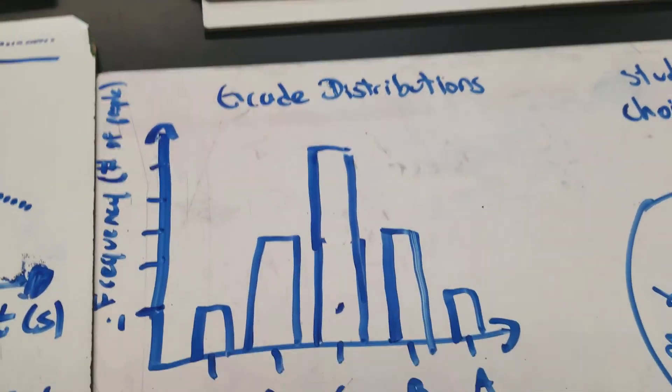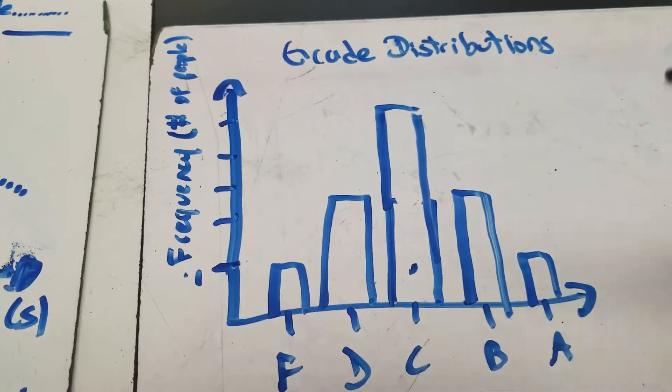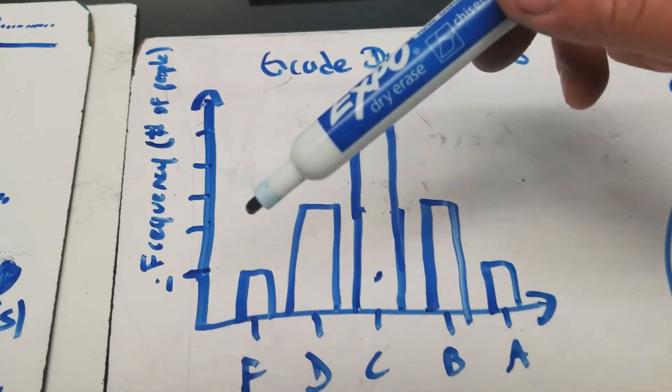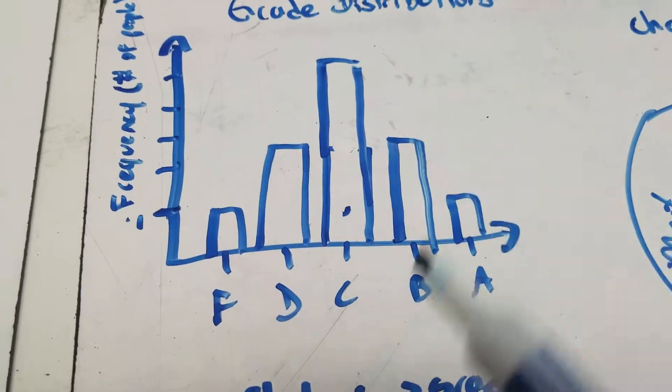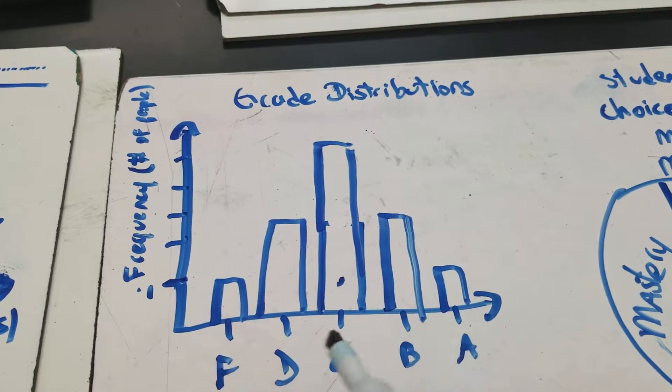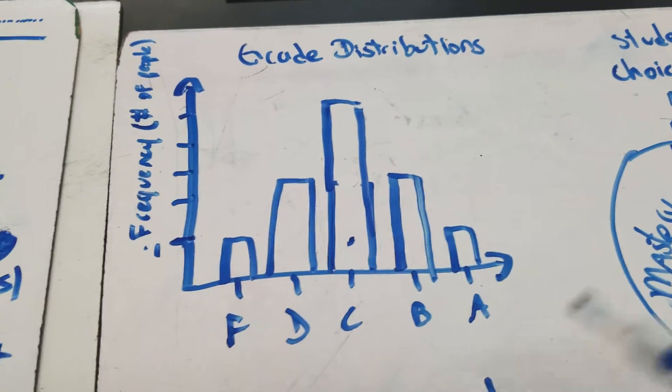And, for example, here I have grade distributions. So you have the frequency of how many students received each one of those grades. And a bar graph is kind of showing you that, too. But that's really a histogram. And we'll talk about that in a second.